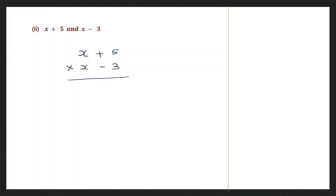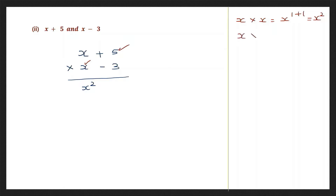Let's start by multiplying x and x. So x into x will be x to the power of 1 plus 1, which is x squared. Let's write it down. We finish multiplying x with x. Now we are going to multiply x with 5: x into 5 is 5x. So let's write that down — plus 5x.